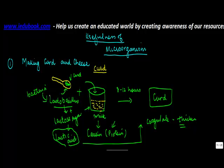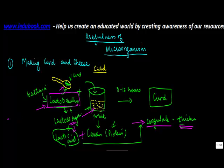So basically, to summarize: the Lactobacillus present in a spoon of curd reacts with lactose sugar present in the milk to form lactic acid. This lactic acid would react with casein, the protein present in the milk, to thicken it up and form curd. And this very bacteria, together with another bacteria known as Streptococcus, helps in the formation of cheese.